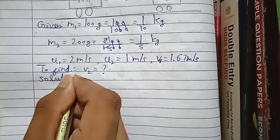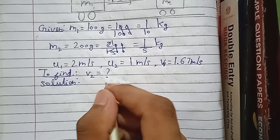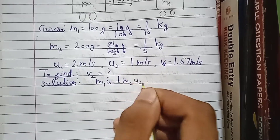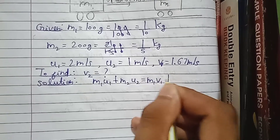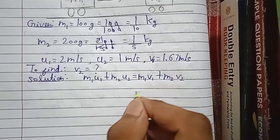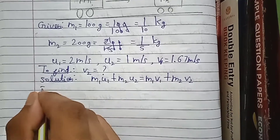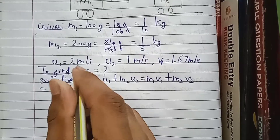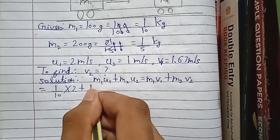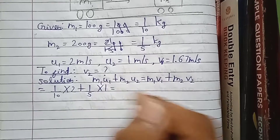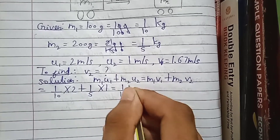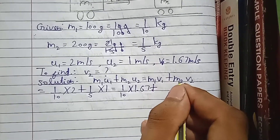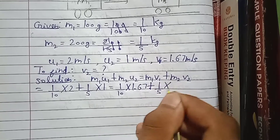Now for the solution, we will use the conservation of momentum formula: m1·u1 + m2·u2 = m1·v1 + m2·v2. We just need to put in the values and solve. So m1 is 1/10, multiplied by u1 which is 2, plus m2 which is 1/5 multiplied by 1, equals m1 again 1/10 multiplied by 1.67, plus m2 which is 1/5 multiplied by v2 — which we need to find.